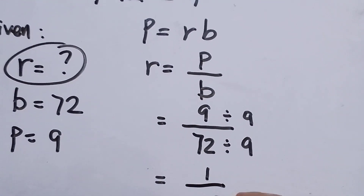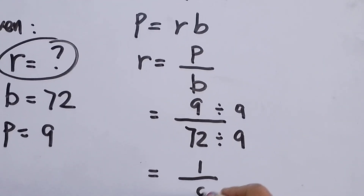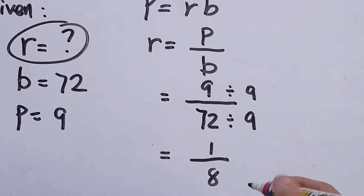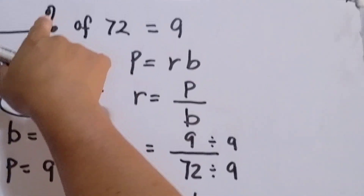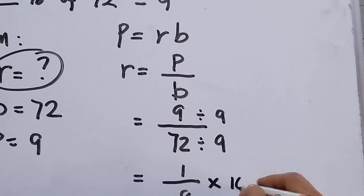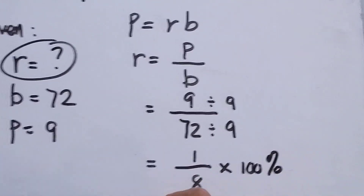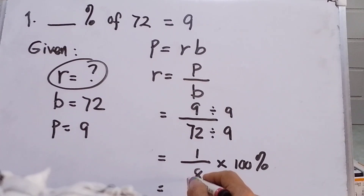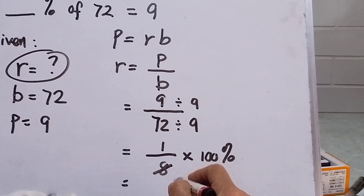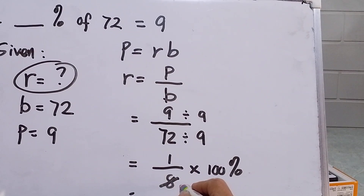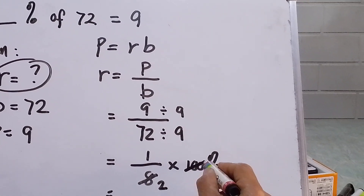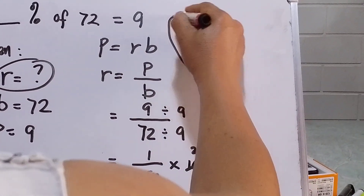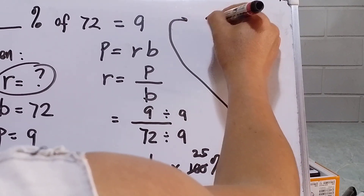Nine divided by 9 is 1, and 72 divided by 9 is 8, giving us 1 over 8. We then need to convert to a percentage by multiplying by 100 percent, giving us 100 over 8. We reduce by dividing by 4: 8 divided by 4 is 2, and 100 divided by 4 is 25.